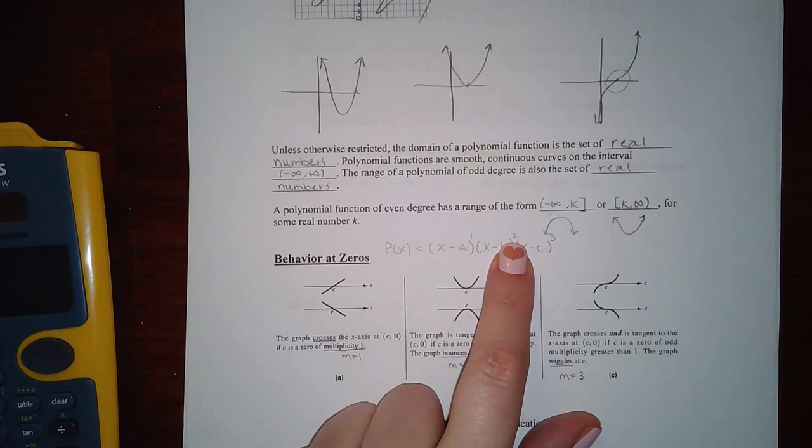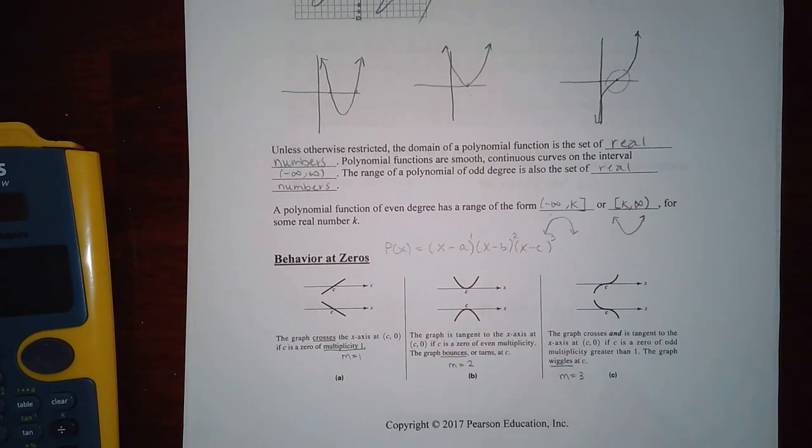If it has a multiplicity of two, four, six, eight, anything that is even, it is going to bounce off of that particular x intersect. Now if they ever ask you for the lowest possible degree, well what's the lowest even number? The lowest even number is going to be two.